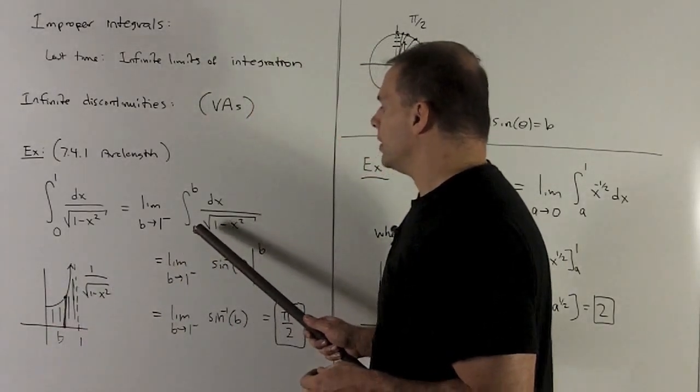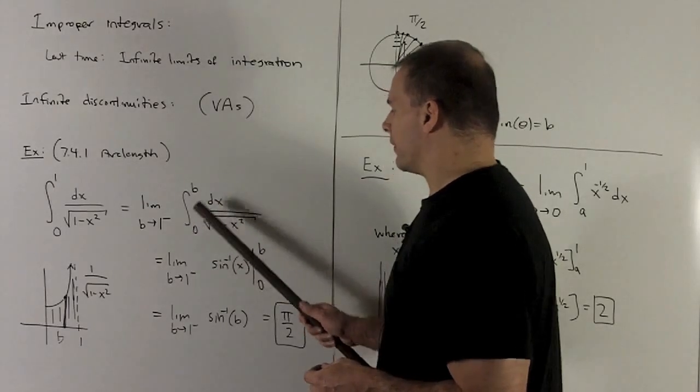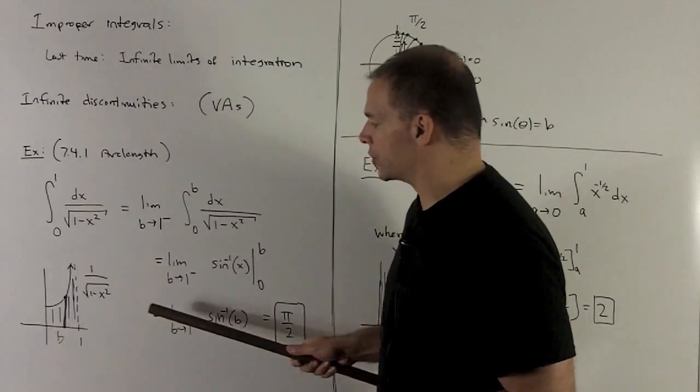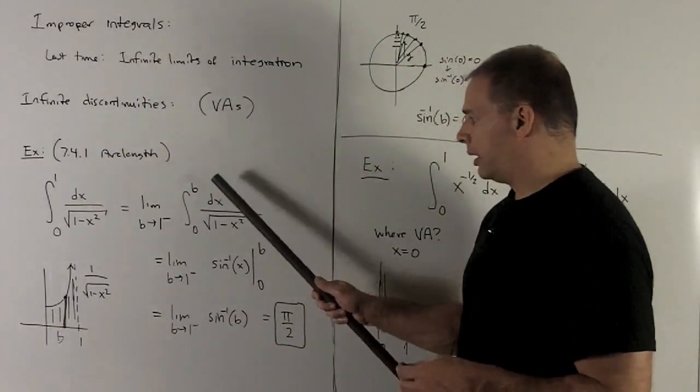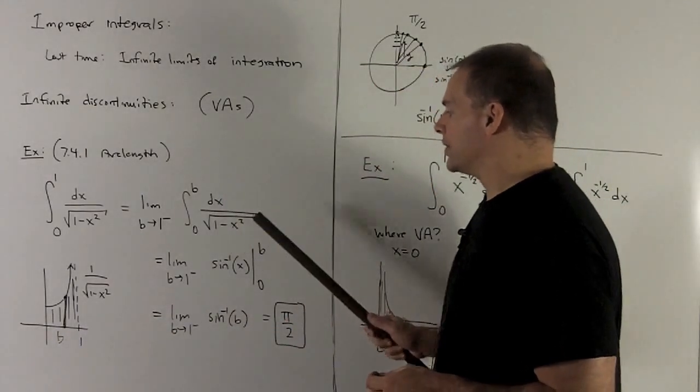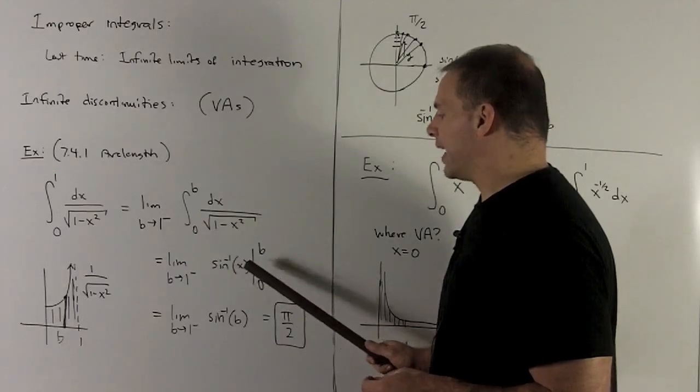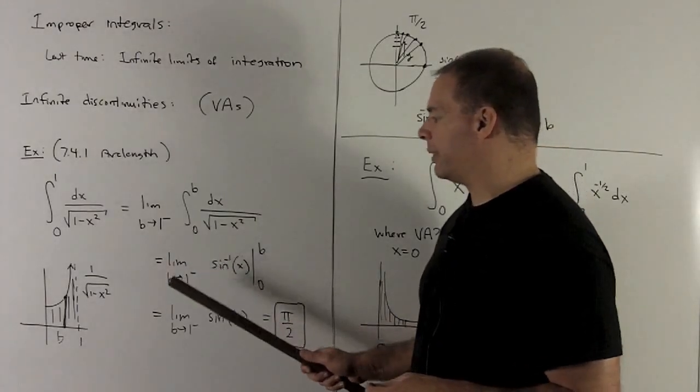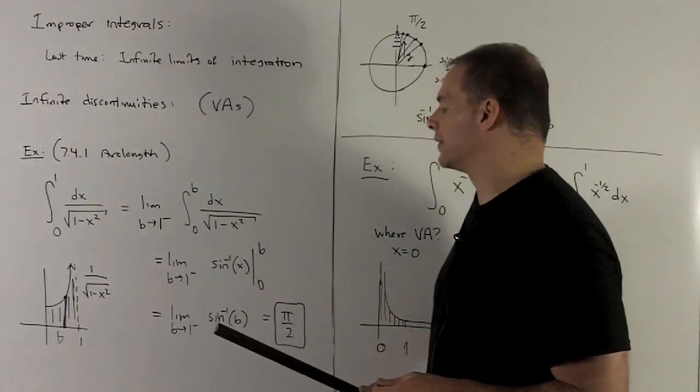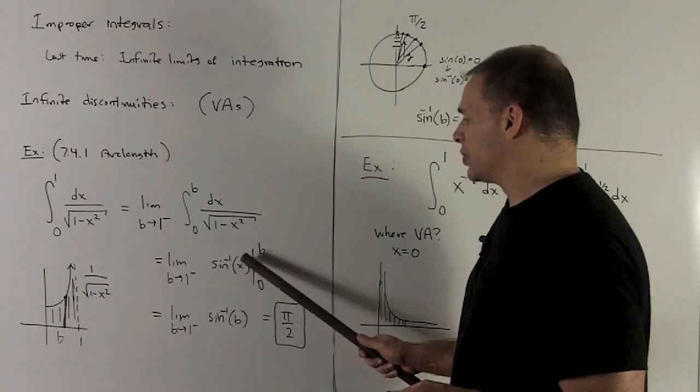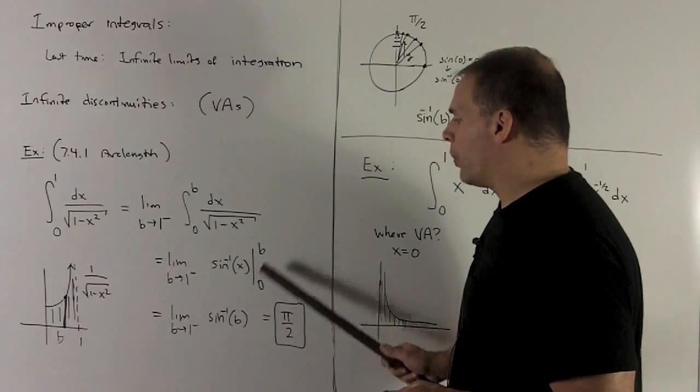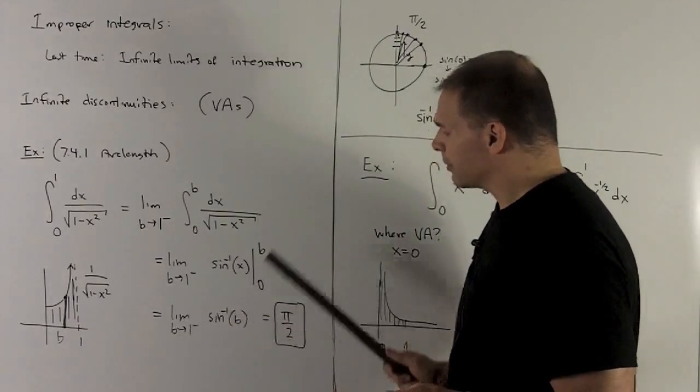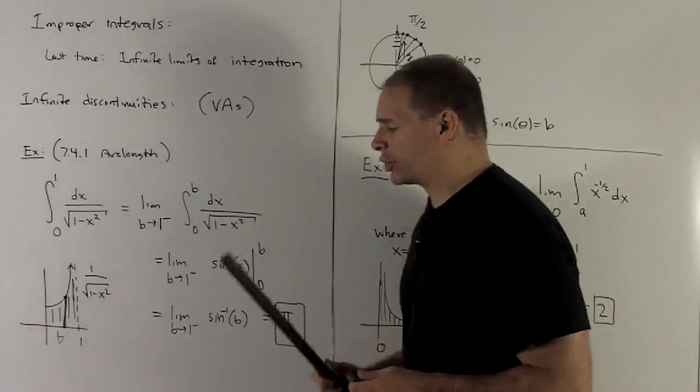We're going to compute the definite integral from 0 to b of our function, and then take the limit as b goes to 1 from the left, since we're going to push it this way. The antiderivative of 1 over radical 1 minus x squared is inverse sine of x. So I'm going to evaluate that at b and 0, take their difference, and then take the limit as b goes to 1 from the left. Sine inverse of 0 is 0, so I'm just going to wind up with sine inverse of b. Take the limit as b goes from the left.